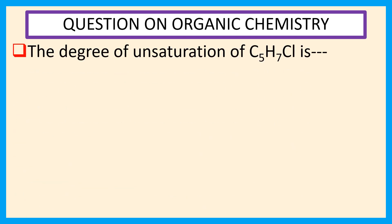The degree of unsaturation of C5H7Cl is, choices are A 0, B 2, C 4, D 5.